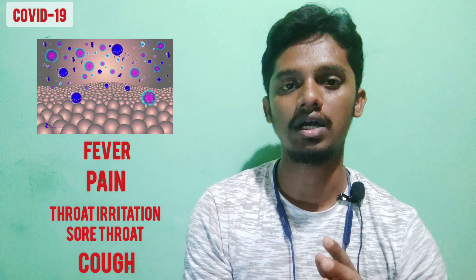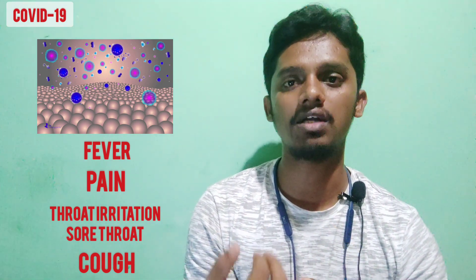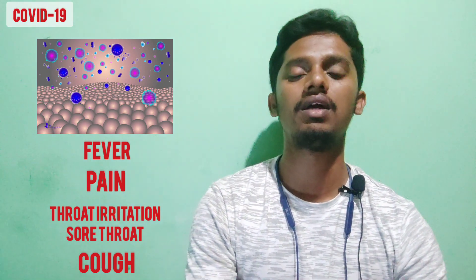The cytokines cause fever, pain, and other symptoms. After the 5th day, cytokines can trigger the production of autoantibodies. These autoantibodies, if they share the same antigen structure as our lungs and blood cells, begin attacking our own lung tissue and blood cells.